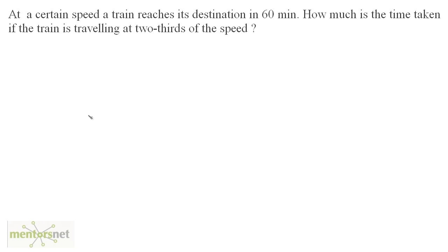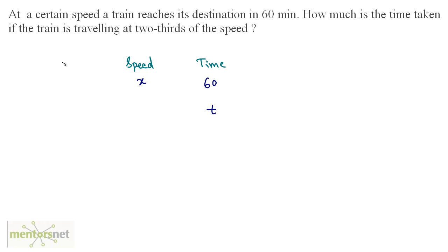Here is another question: at a certain speed, a train reaches its destination in 60 minutes. How much time is taken if the train is traveling at two-thirds of the speed? We have two quantities — speed and time — and the distance is the same. Let the original speed be x, giving a time of 60 minutes. Let the new time be t when the speed is two-thirds of x.